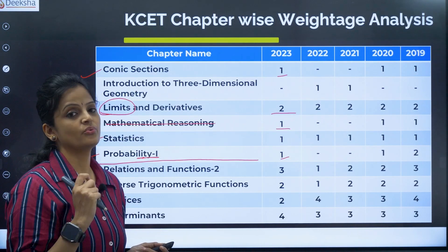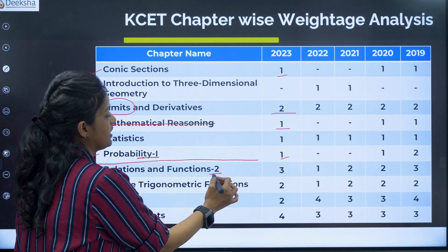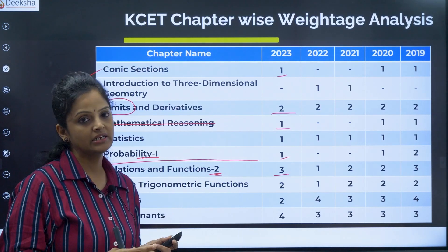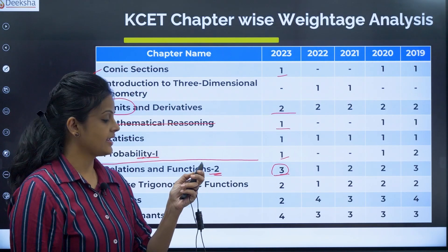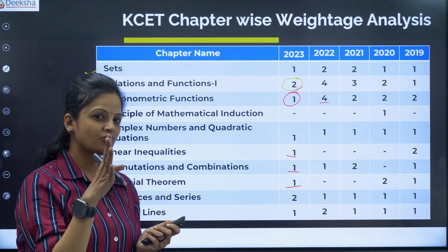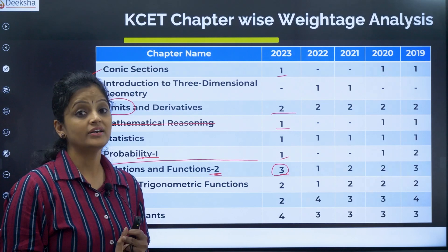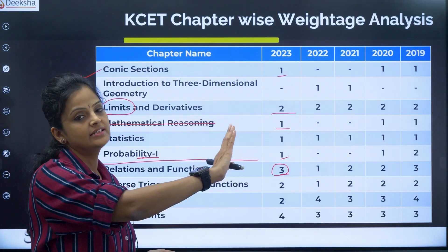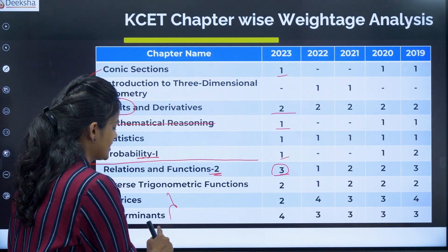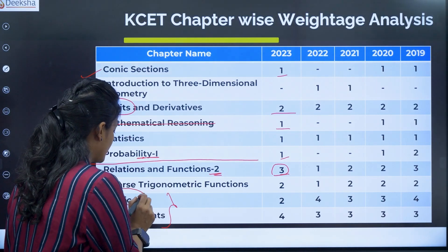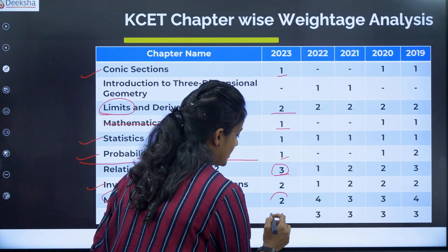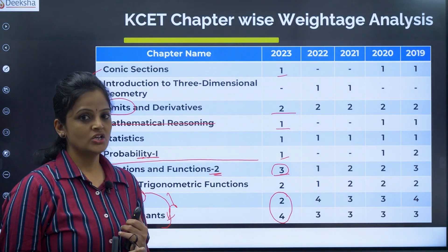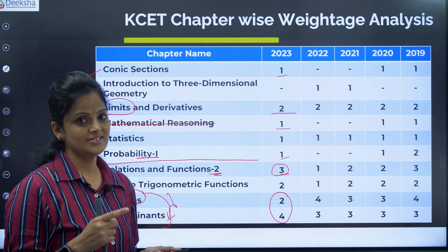In second year, Relations and Functions — three questions on average, approximately three. In 2023 there were three questions. Together with the first PUC part, we can keep four to five. Inverse Trigonometry is a continued part of Trigonometric Functions — for sure you will get two questions; they ask it consistently every year. Matrices and Determinants can be taken as one chapter since the entire concept of matrices is involved in determinants. Together they give six to seven questions — previous year six questions came. That is the most important chapter in second PUC.